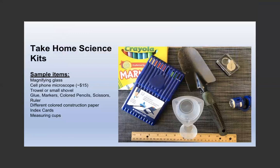We get to the take-home science kits. This is one example - it can be anything. Plan long-term: think about what you'll do September through December, then January on, and have a kit that everybody has. Some sample things: I love a trowel - about a dollar at the dollar store. Containers for measuring, a ruler, markers, colored pencils, magnifying glasses, index cards, the cell phone microscope if possible. Anything you think they can use, especially things they can use over and over again, plus things they might collect at home.